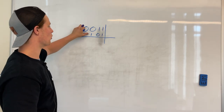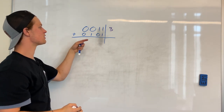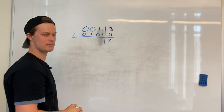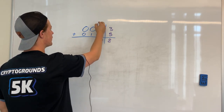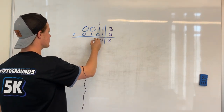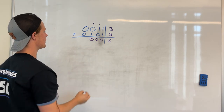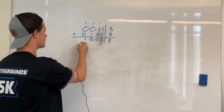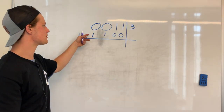Before wrapping up, let's look at some basic binary addition. We have 0011 plus 0101. The first binary number in base 10 is 3, and the second is 5, so we should get 8. Starting from the right: 1 + 1 = 0, carry the 1. Then 1 + 0 + carried 1 = 0, carry the 1 again. Then 0 + 1 + carried 1 = 0, carry the 1. Finally, 0 + 0 + carried 1 = 1. Result is 1000, which is indeed 8. Correct!